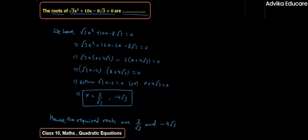So from here, the two possible values of x are 2/√3 and -4√3. This will be my final answer. Thanks for watching this video. Please subscribe to our YouTube channel.